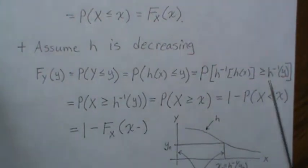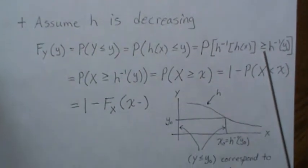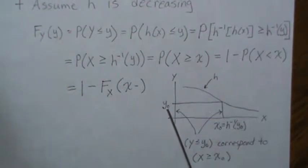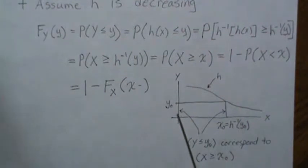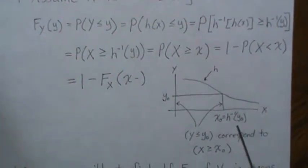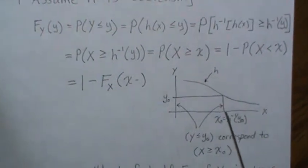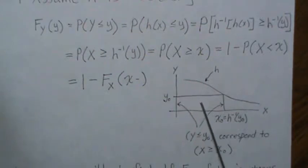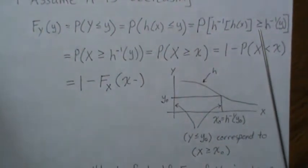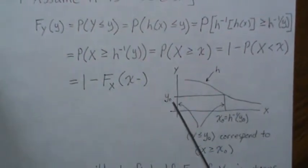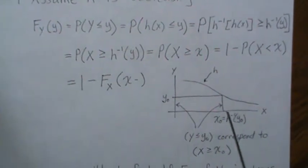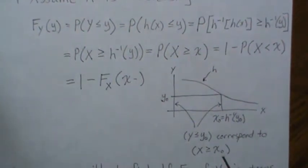Here's the justification for why the inequality changes when H is decreasing. Take a value Y₀ — we want values less than it. When we apply the inverse transformation to get the corresponding X₀, the values associated with Y less than Y₀ map to X values greater than X₀. So since we're interested in Y values less than Y₀ and H is decreasing, the transformation maps those to X values greater than X₀, which is why the inequality switches.